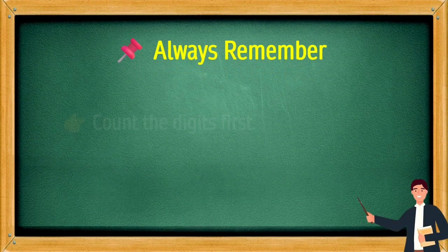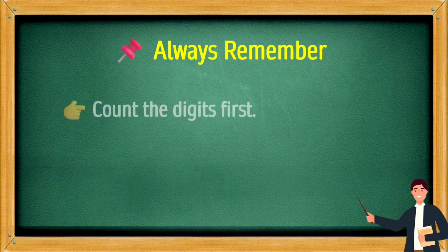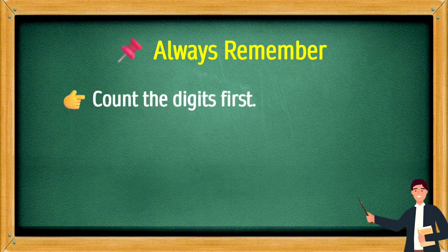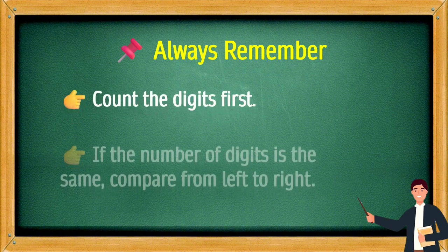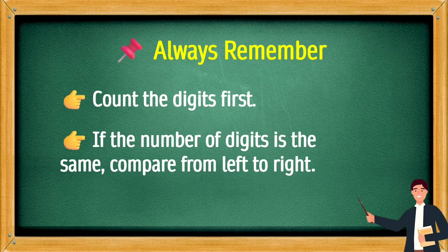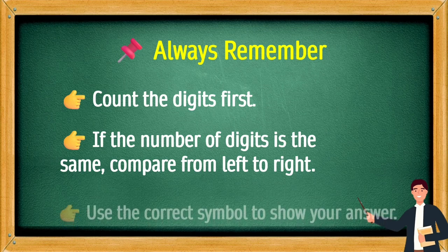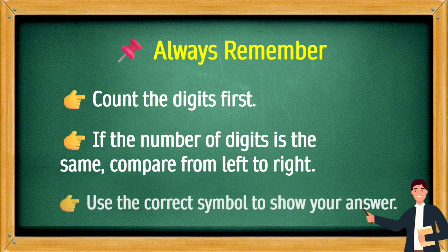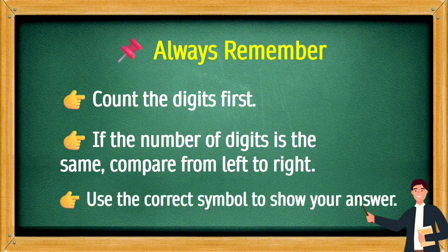Carlos's house number is 987 while another house is 1,025. Whose house has the bigger number? Always remember: count the digits first. If the number of digits is the same, compare from left to right. Use the correct symbol to show your answer.